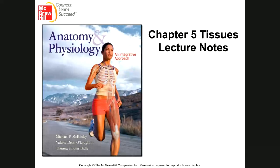Today we're going to cover chapter 5, which is about tissues. Tissues are made out of cells — we talked about cells in chapter 4. Cells are the smallest living structures on the planet and the fundamental units of life, the things that build bigger organisms.